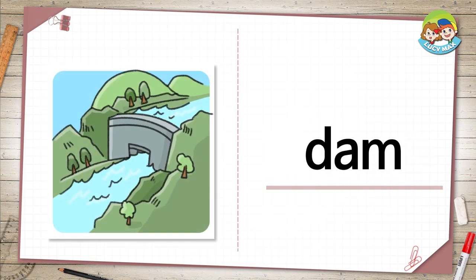Dam. This is a dam. It is built across the river. A dam stops the water from flowing and lets a little water out at a time. While doing that, the water makes power. And we use the power to make electricity.